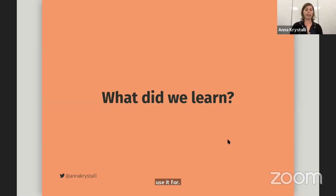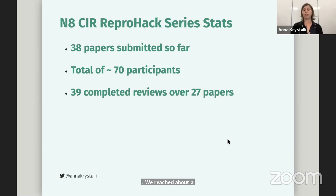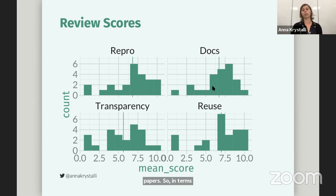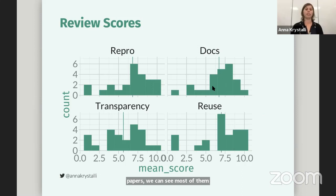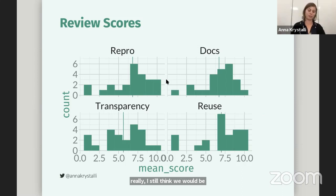So what did we learn throughout the N8 ReproHack series? A few stats: we've had 38 papers submitted so far. We reached a total of about 70 participants and they completed 39 reviews over 27 papers. In terms of the scores they gave the papers, most of them are skewed towards decent scores, with medians of about seven apart from transparency, which is a little bit lower. But we do see a wide range all the way down to ones and twos. And it's important to note that these papers are self-selected, because they thought they were reproducible. So really, we'd still be wanting to see everything more in the seven and above — we're doing well, but we've still got some work to do.